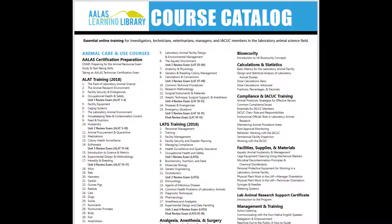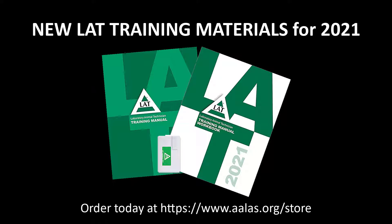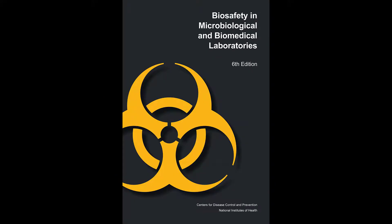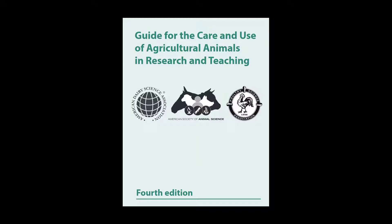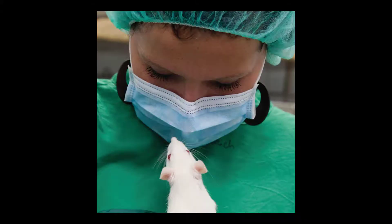Find out what's new for 2021 at the ALAS Learning Library and see the current course catalog. Highlights include LAT courses, practice exercises, and exams that align with the 2021 edition of the LAT manual. A BMBL course based on the sixth edition, five courses on the responsible conduct of research which you can find in the new research ethics library, a guide for the care and use of agricultural animals in research and teaching course based on the fourth edition, and a humane endpoints course.